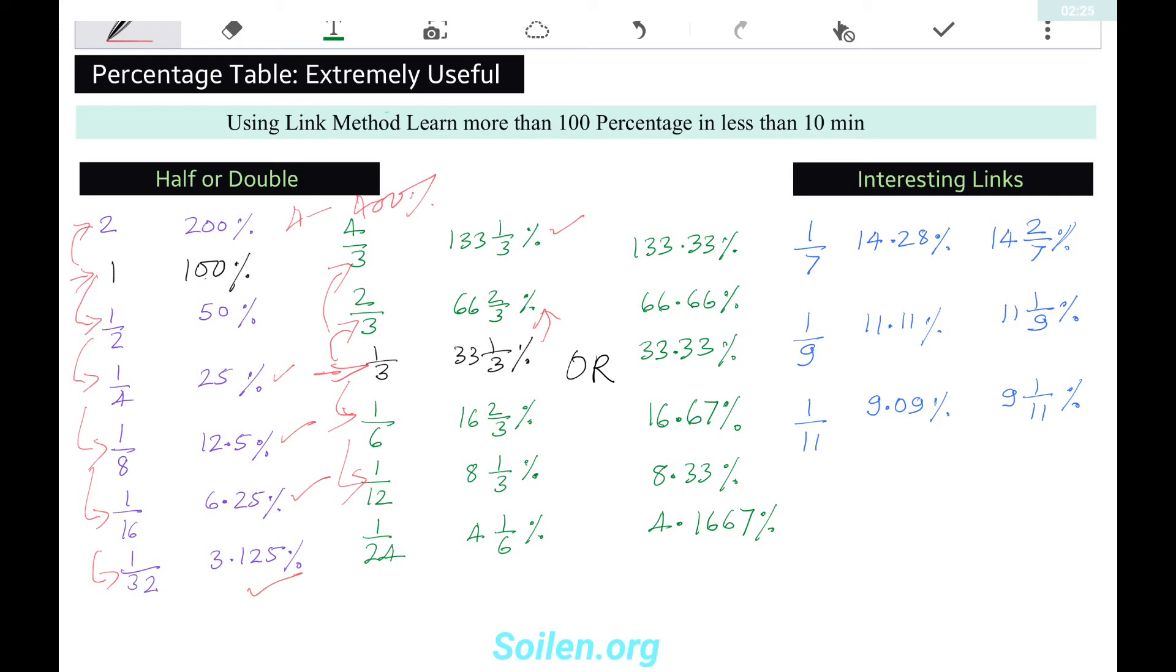Now, some interesting links. We can write 1/7 as approximately 14.28 percent. This is 7, double is 14, then 28. So we can remember it easily. We can also write this as 14 and 2/7 percent.